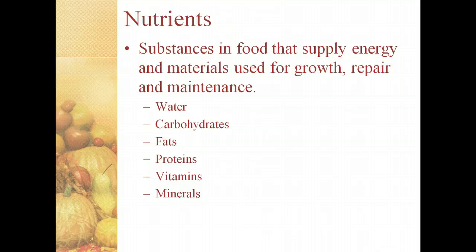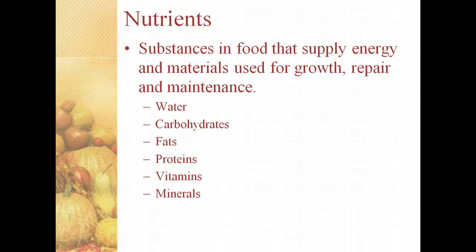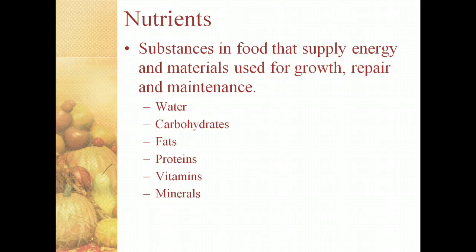The first term that we're going to learn about is nutrients. Nutrients are substances in food that supply energy and materials that are used for growth, repair, and maintenance. Some examples of nutrients are water, carbohydrates, fats, proteins, vitamins, and minerals.